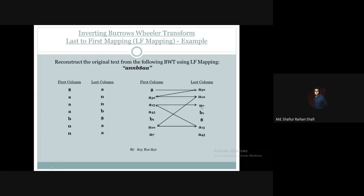Then the last column is N7. So we go to N7 and keep N7 just before A15. Then from N7 in the first column, the last column is A45. So we pick A45 and prepend it. Then the last column is A45, the first column is A45. The last column of that row is B1. So we pick B1 and prepend it.